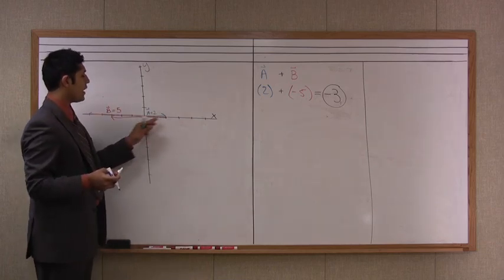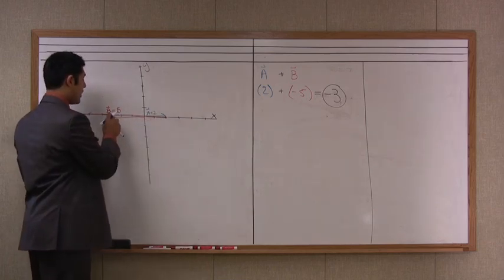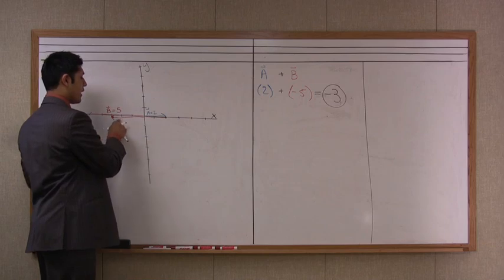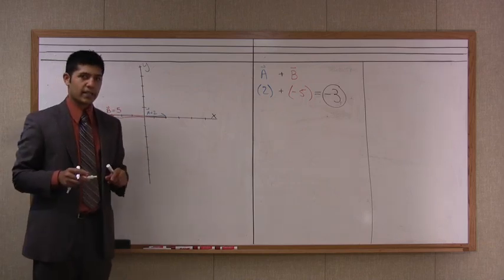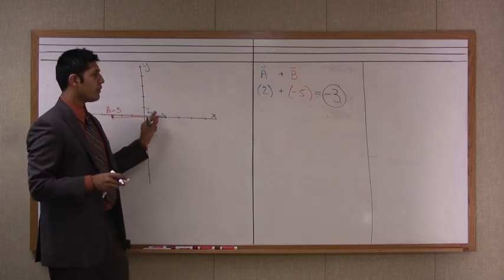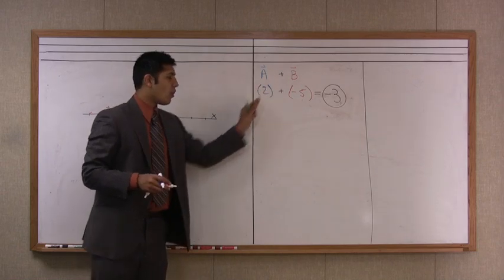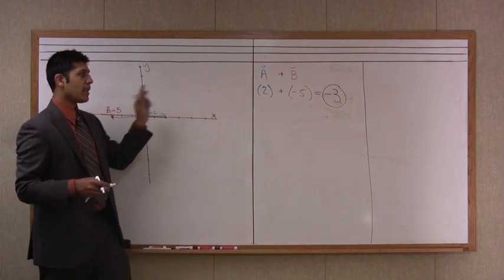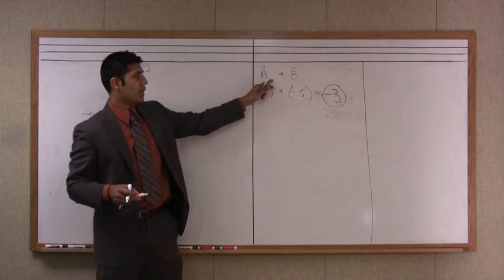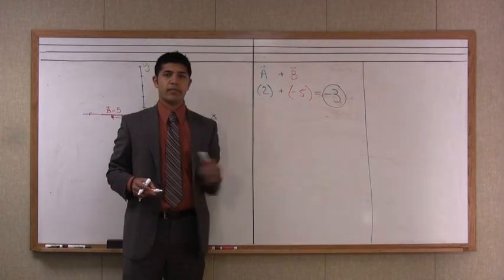And so as I do the head-to-tail unit, I can see that my end point here is at negative one, negative two, and negative three on the x-axis. So whether we just did a substitution for our units, for our values, or if we use the head-to-tail method, we should still get the same answer that vector a plus vector b is negative three.